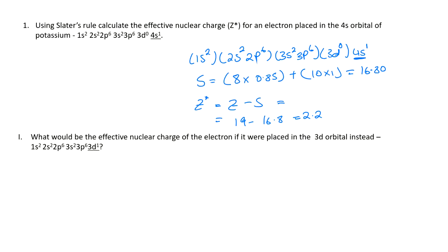I just realized I wasn't recording the session. It's being recorded now. All right. So for the first question, we were asked to use Slater's rules to calculate the effective nuclear charge for potassium's 4s orbital, and we find that the effective nuclear charge would be 2.2.